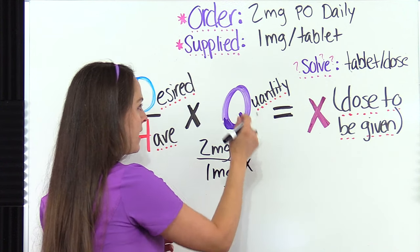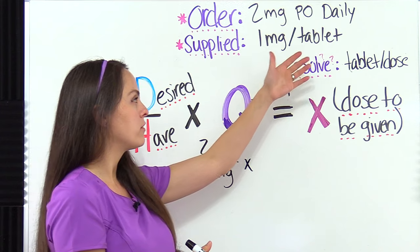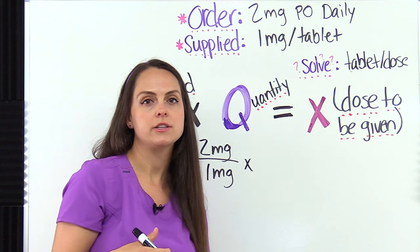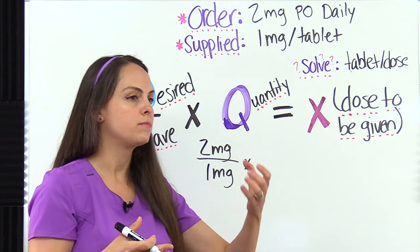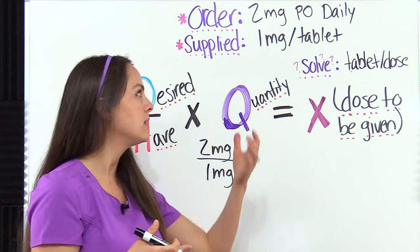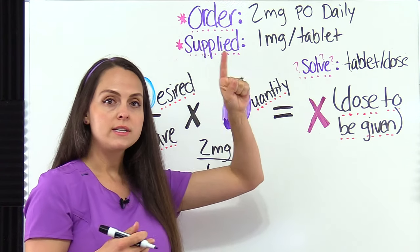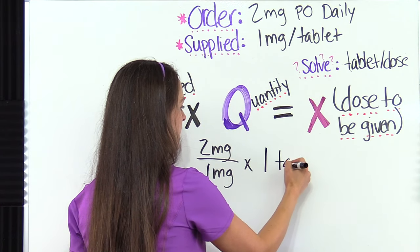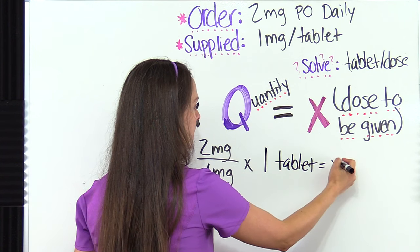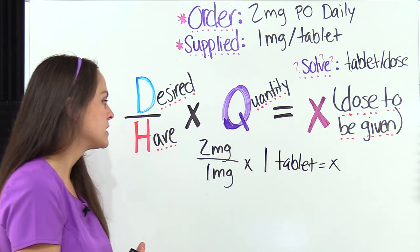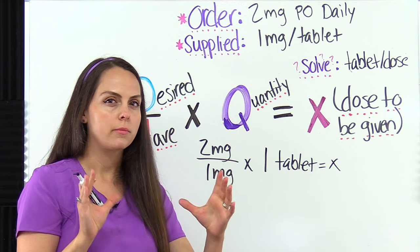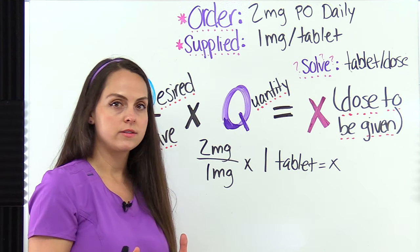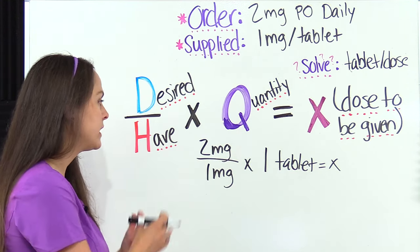Now we're going to multiply that by the quantity. The quantity is the amount or volume of that dosage strength that we're supplied with — also found on the medication label. Looking at this bottle of tablets, it tells us that one tablet equals one milligram. So our quantity is one. One tablet equals X, and that's what we're solving for. We have to make sure the units match up, and here they do, so they cancel out and we solve.